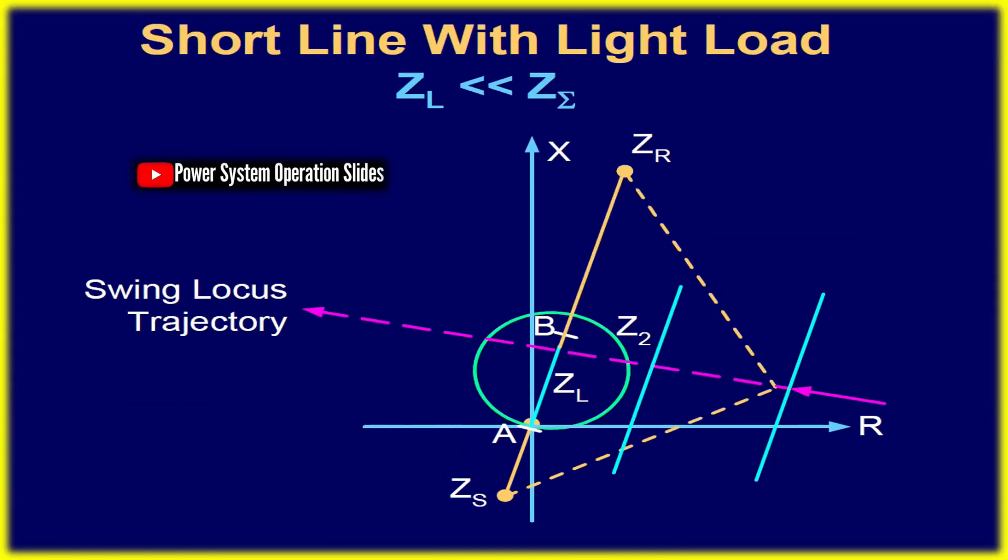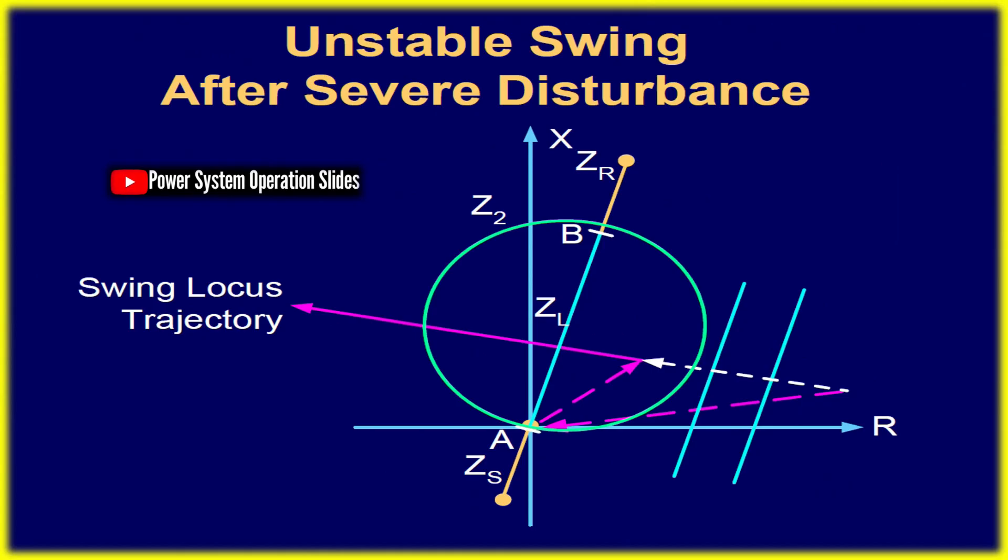Out-of-step protection schemes address these conditions, ensuring distance relay performance remains effective under such circumstances. Key challenges include handling unbalanced external faults and ensuring that only the affected phase trips, rather than all phases, during a fault.